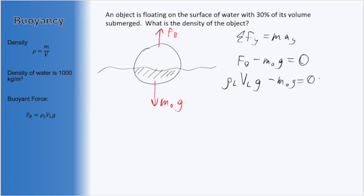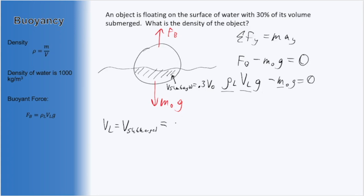We can use the fact that the buoyant force equals the density of the liquid times the volume of the liquid displaced times gravity. At this point, we don't know the mass of the object, but we know the density of water is 1000 kg per meter cubed. The volume of displaced liquid equals the volume of the object that has been submerged. We aren't given an actual value for the submerged volume, but we're told it is 30% of the entire volume, so we can write the displaced volume as 0.3 times the entire volume of the object.